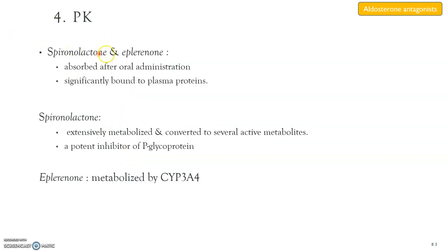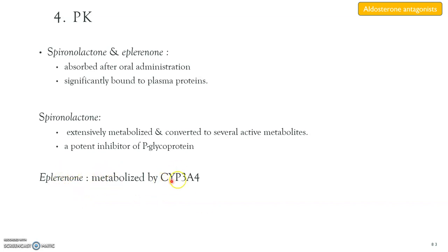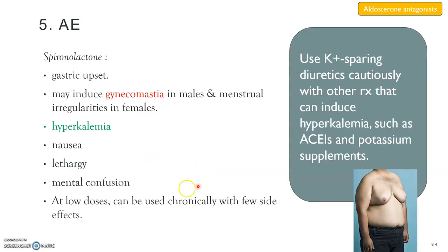Regarding pharmacokinetics, both spironolactone and eplerenone are absorbed after oral administration and are significantly bound to plasma proteins. Spironolactone is extensively metabolized and converted to several active metabolites, and is an important inhibitor of P-glycoprotein. Eplerenone is metabolized by cytochrome P450 3A4 (CYP3A4).